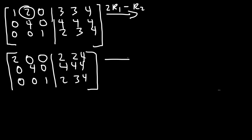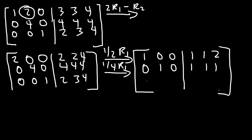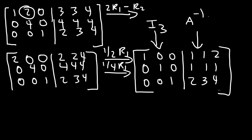Now what we need to do is multiply the first row by 1/2 and the second row by 1/4. That should give us what we need. Half of 2 is 1. Half of 4 is 2. One-fourth of 4 is 1, so all of those entries become 1. The last row is not going to change. Notice that here we have the multiplicative identity matrix I3, and this side represents the inverse of matrix A: 1, 1, 2, 1, 1, 1, 2, 3, 4.